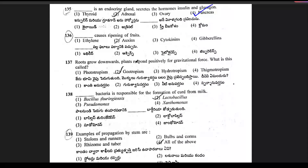Question 136: blank causes ripening of fruits. The answer is nothing but ethylene. Ethylene is used commercially to ripen fruits.